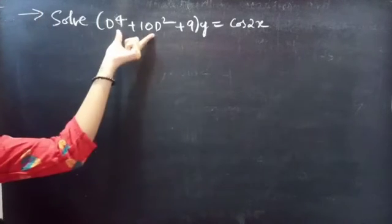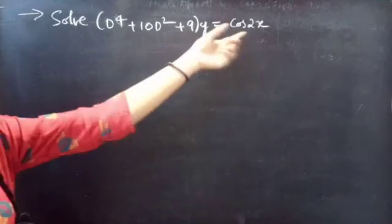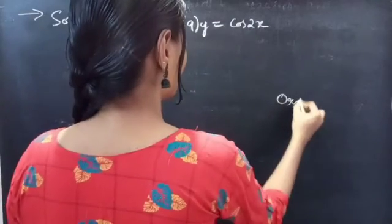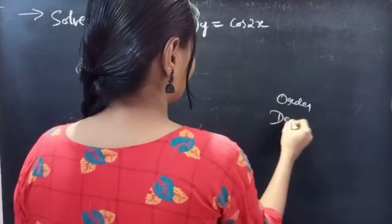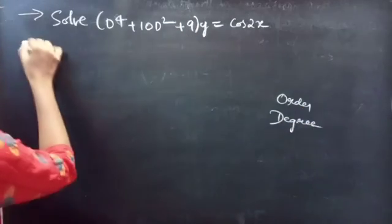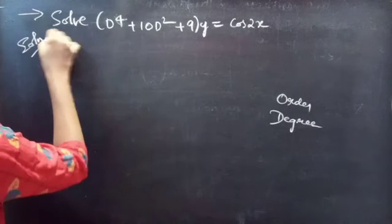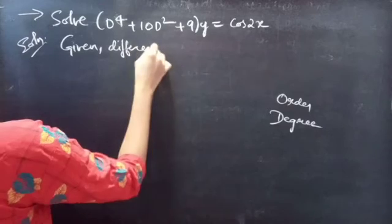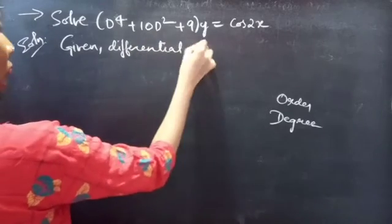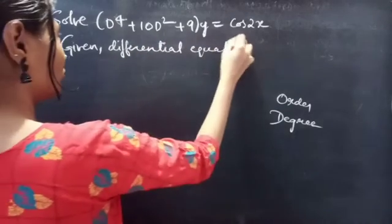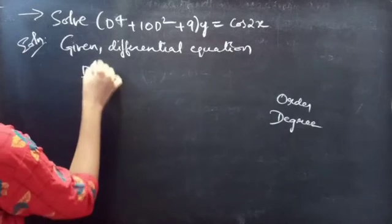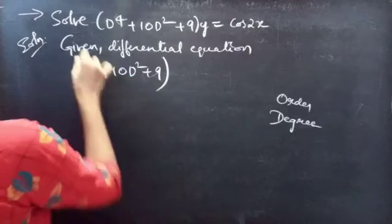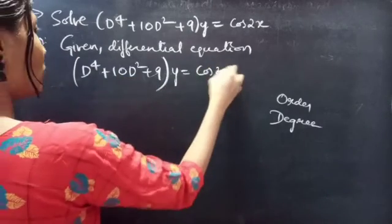Problem: Solve (D⁴ + 10D² + 9)y = 2cos(2x).